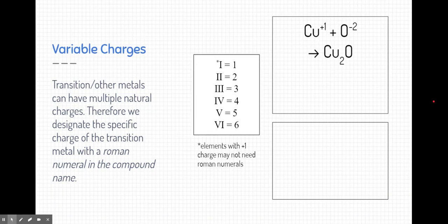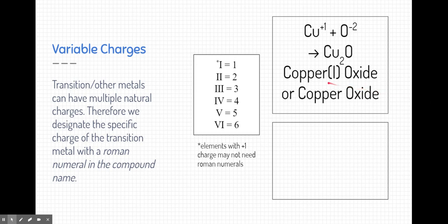Now what would we name this compound? We would call it copper Roman numeral 1 oxide. Remember, the Roman numeral represents the charge of this copper, which I gave to you in this problem. Now you can also call this problem copper oxide. If you notice in our Roman numeral list that elements with a charge of positive 1 or just using Roman numeral 1 are sometimes optional and not included.